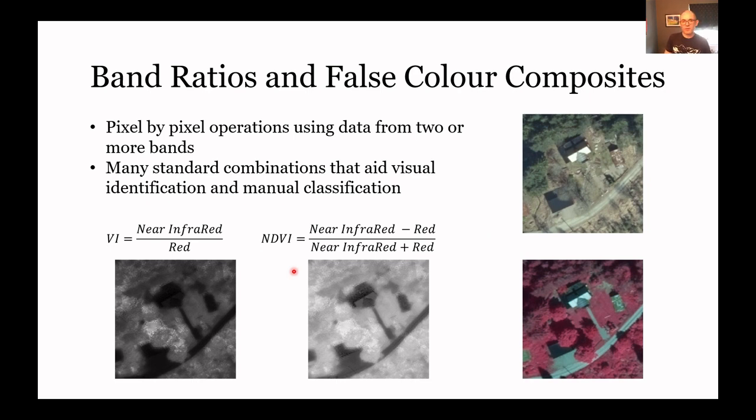Another thing we can do is band ratios. This is moving beyond enhancement now really. We can look at the vegetation index where we just take near infrared and divide it by the red. Band ratios are quite common. More advanced is the normalized difference vegetation index. This one we can typically do on the fly.